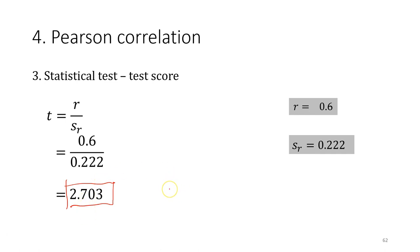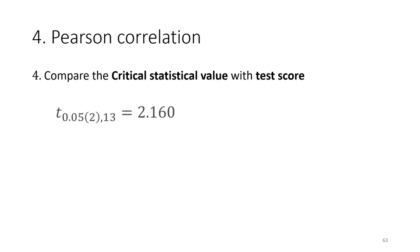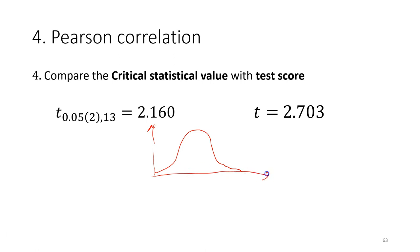The next thing is to compare our calculated t-value with the critical value obtained from the table. The critical value is negative 2.164 on the negative side and 2.164 on the positive side. Our calculated t-value is 2.7, which falls somewhere beyond 2.164 on the positive side — that means it is in the rejection region.